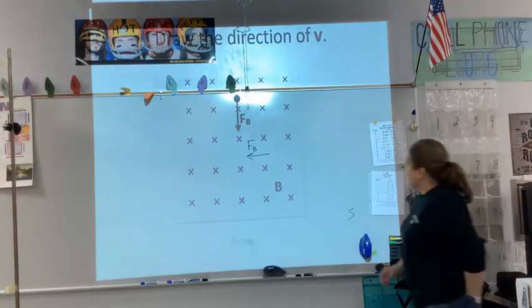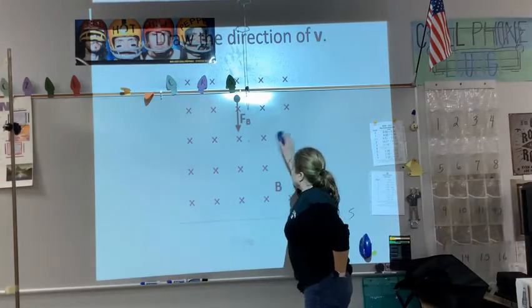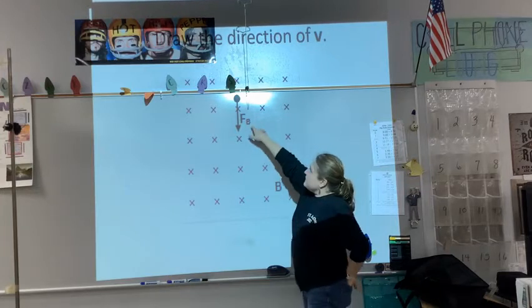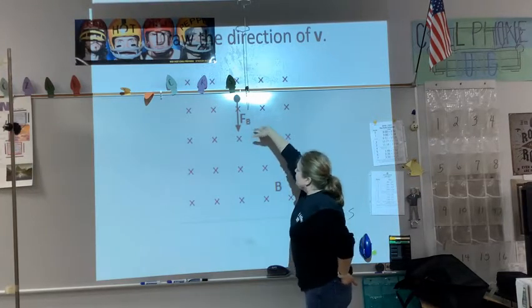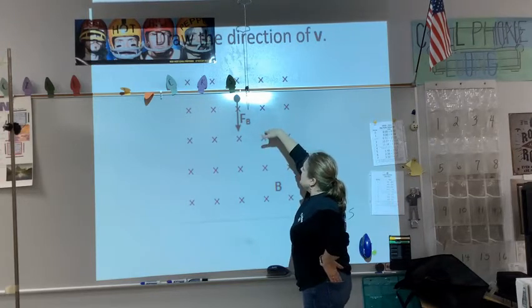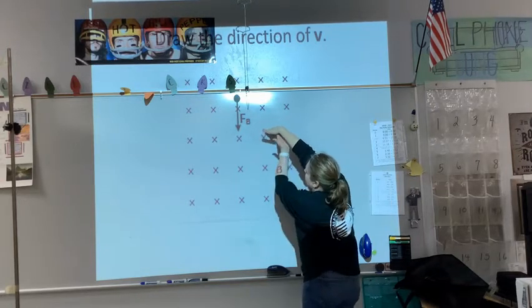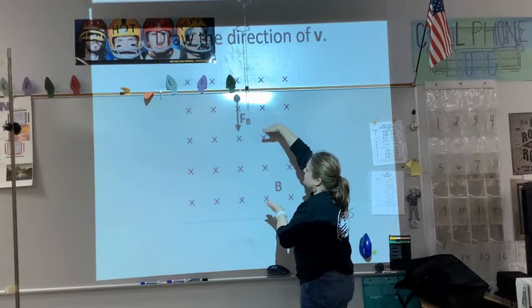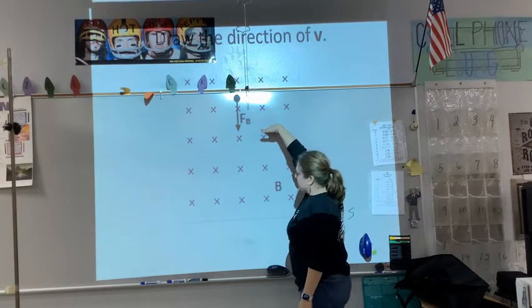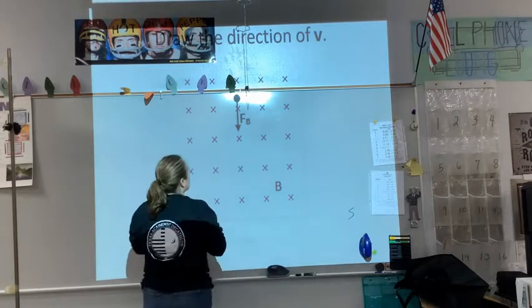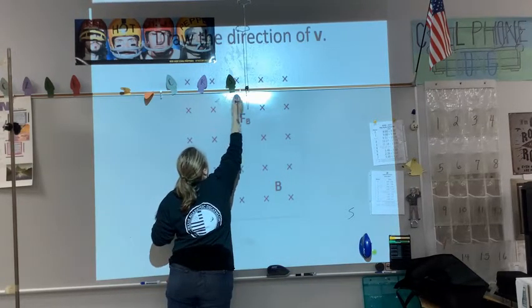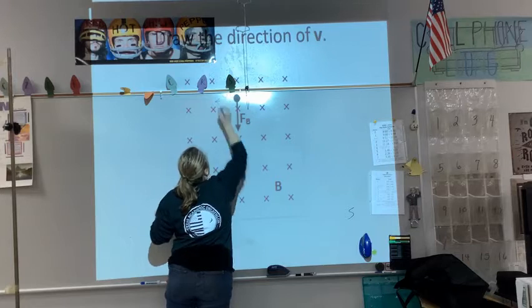In this example, we again have our magnetic field directed into the page, but now it tells us that the force is down. If I orient my fingers into the page with my palm facing down in the direction of force, my thumb would be directed to the left, which tells me that the charged particle would have to be moving to the left, or have a velocity to the left.